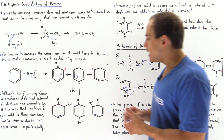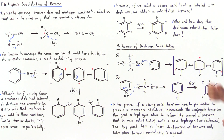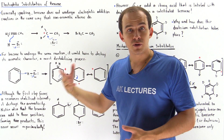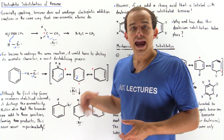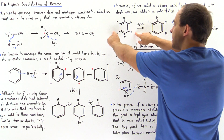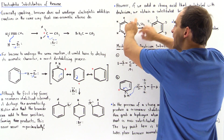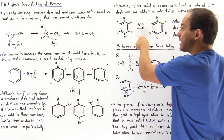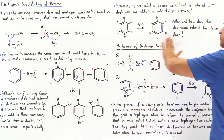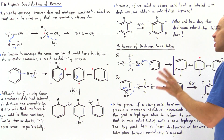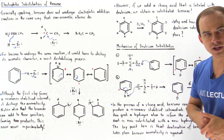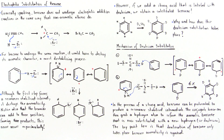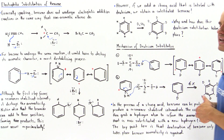Under normal conditions, we never observe these addition products. However, if we add a strong acid labeled with a radioactive atom — for example, replacing the H atom with deuterium — a substituted product is formed. If we take benzene with its six H atoms and react it with this labeled strong acid and wait a very long time, we produce a benzene molecule in which all the H atoms have been substituted with deuterium. The question is why and how does this deuterium substitution actually take place?